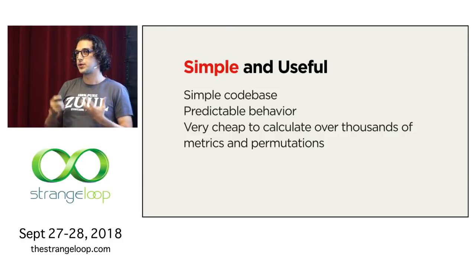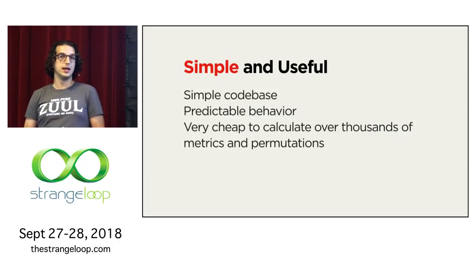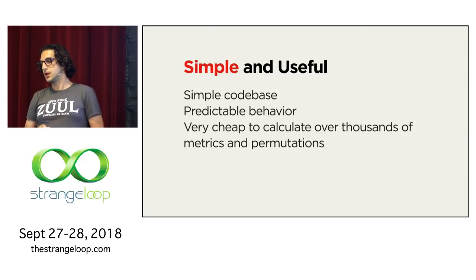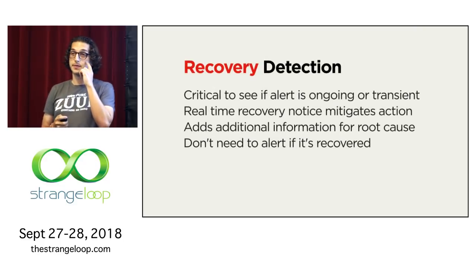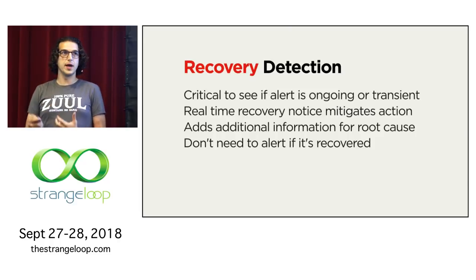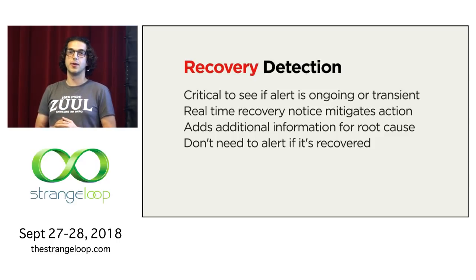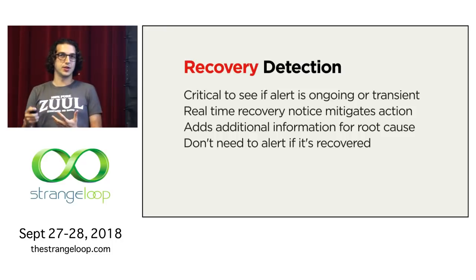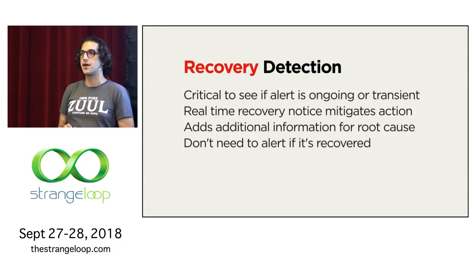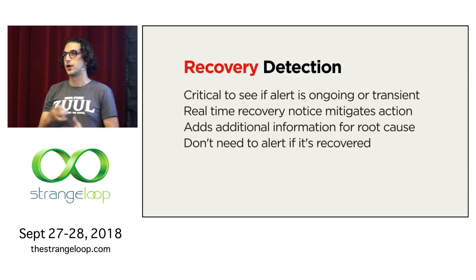The algorithm is also very simple, producing a simple code base and predictable behavior, and is very cheap to calculate over thousands of metrics across all permutations of cluster, origin, and combinations. The other feature we really wanted was recovery detection. It's critical to see if an alert is ongoing or transient — if you wake up in the morning, you don't necessarily want to get out of bed if the thing has already recovered. It also prevents unnecessary action and gives you useful information about the nature of the problem. Since we're building a timeline of events, we could potentially recover before we've even sent the email, in which case we don't need to send it at all.